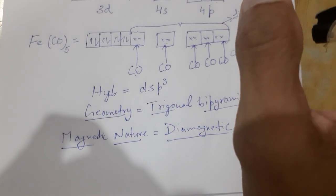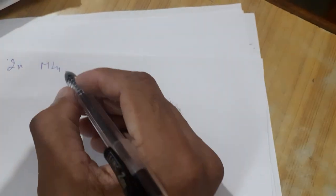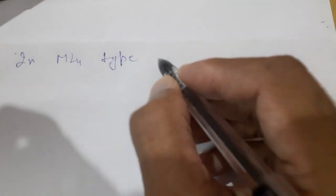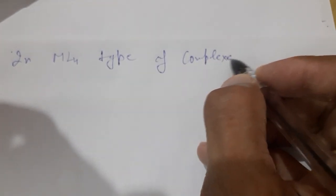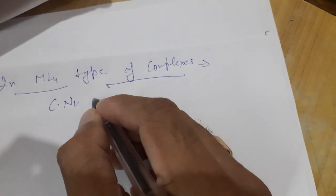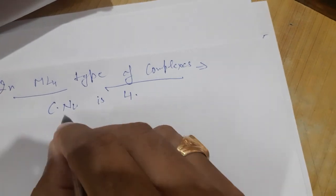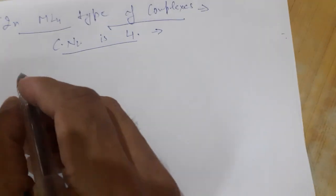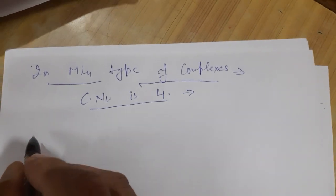Next we will discuss ML4 type of complexes. In ML4 type of complexes, the coordination number is 4, meaning four ligands are attached to one metal ion. The examples of ML4 type coordination complexes in our syllabus are NiCl4, NiCN4, and Ni(CO)4.